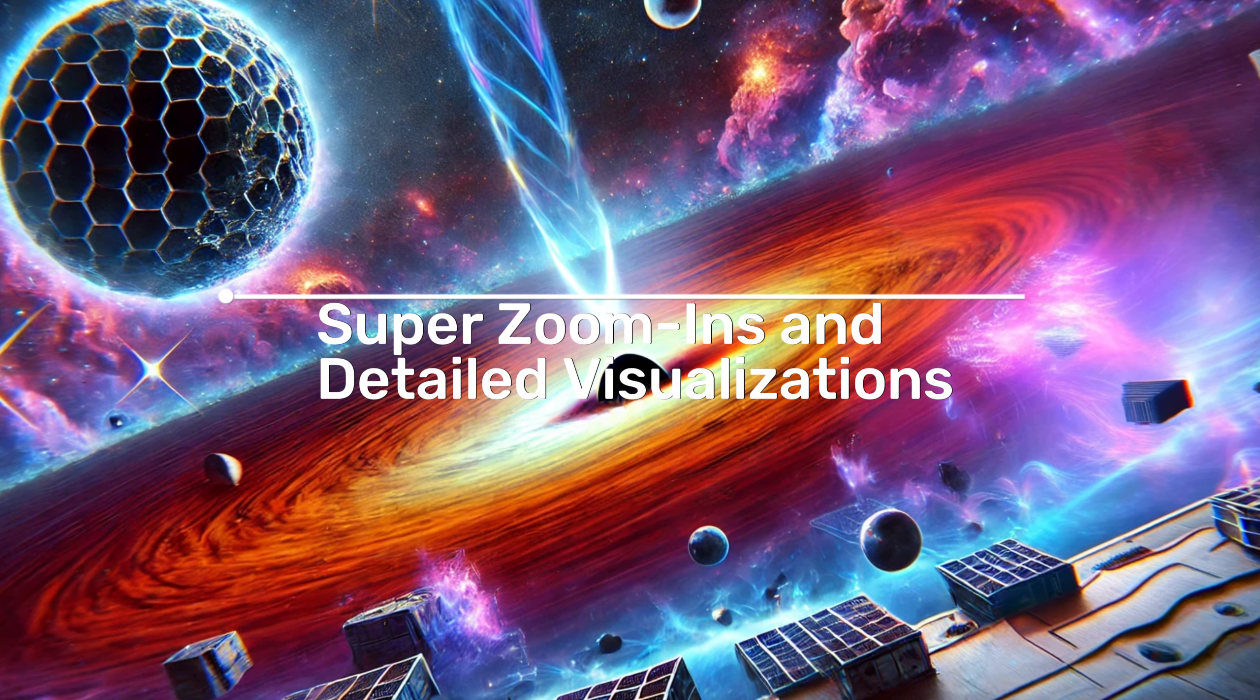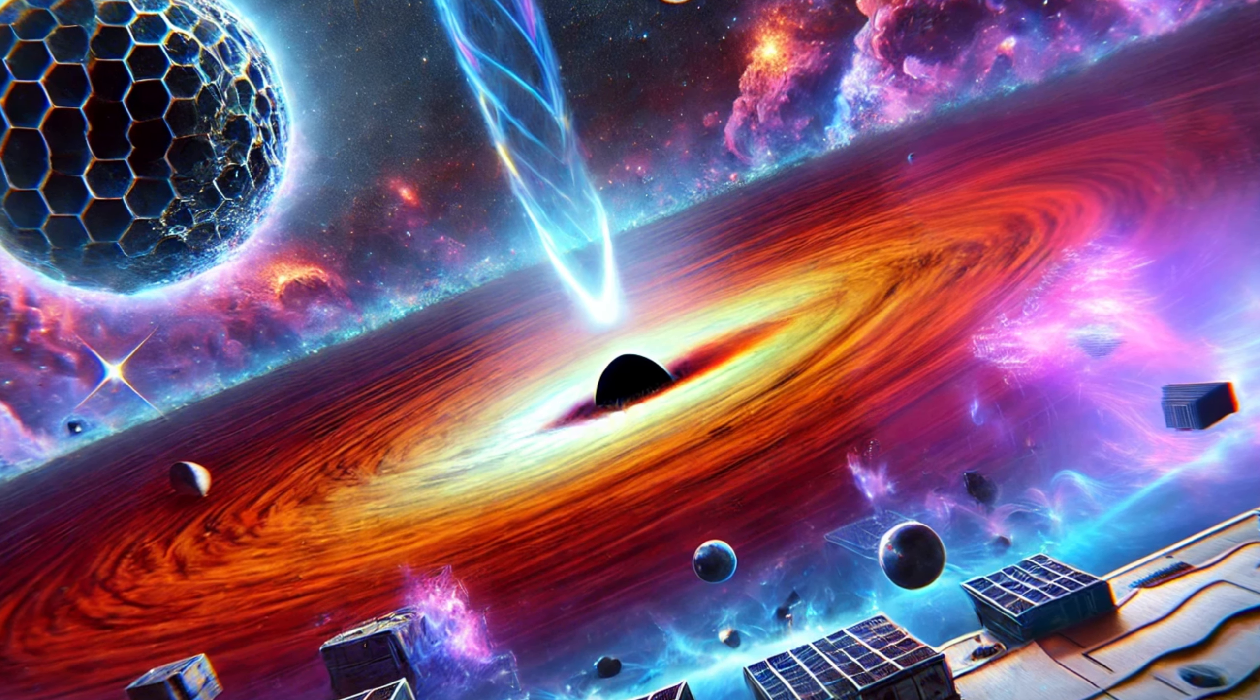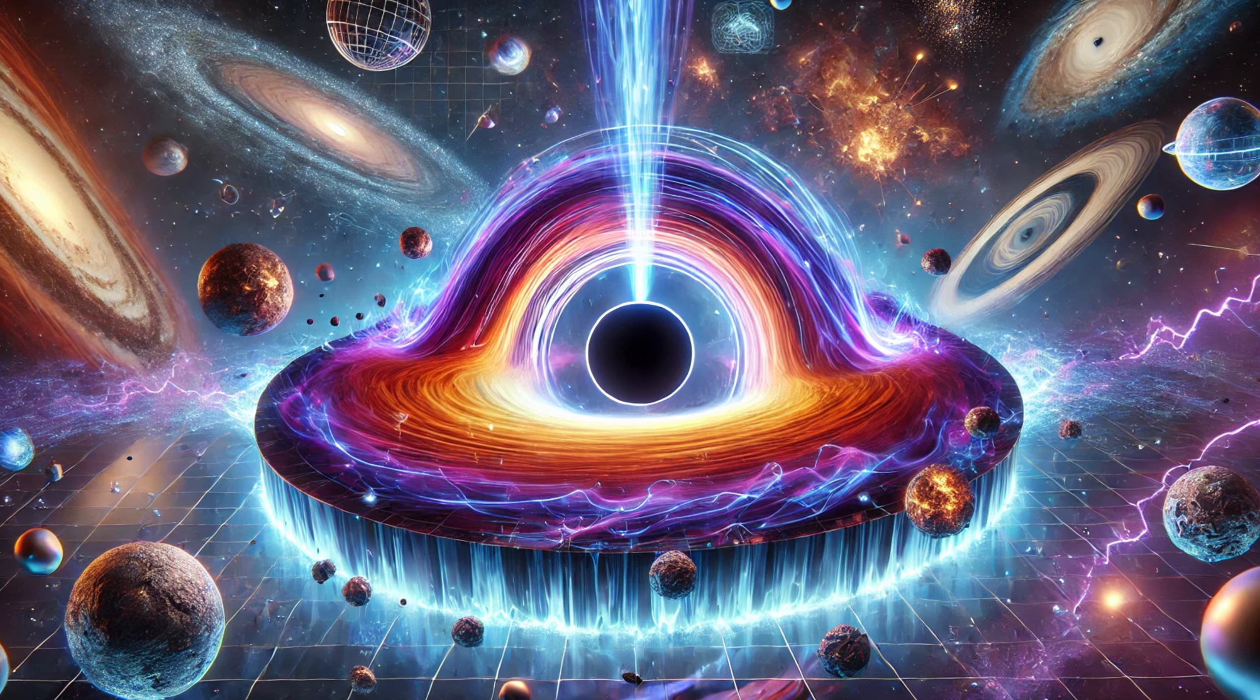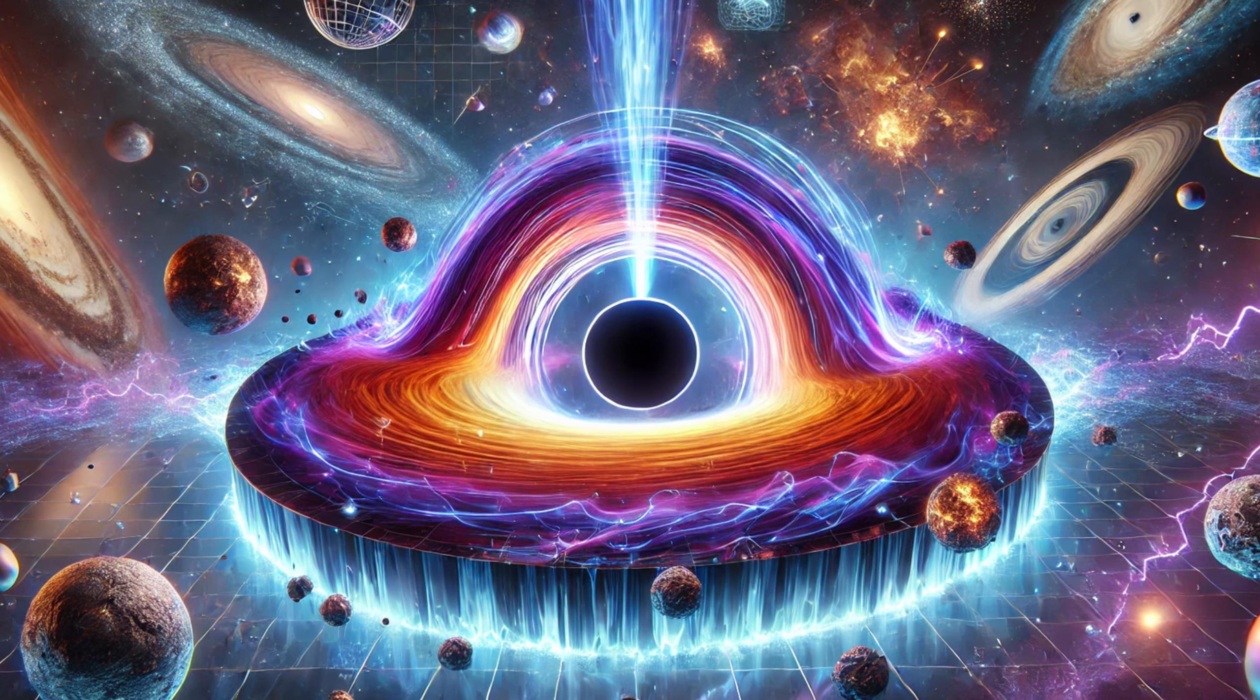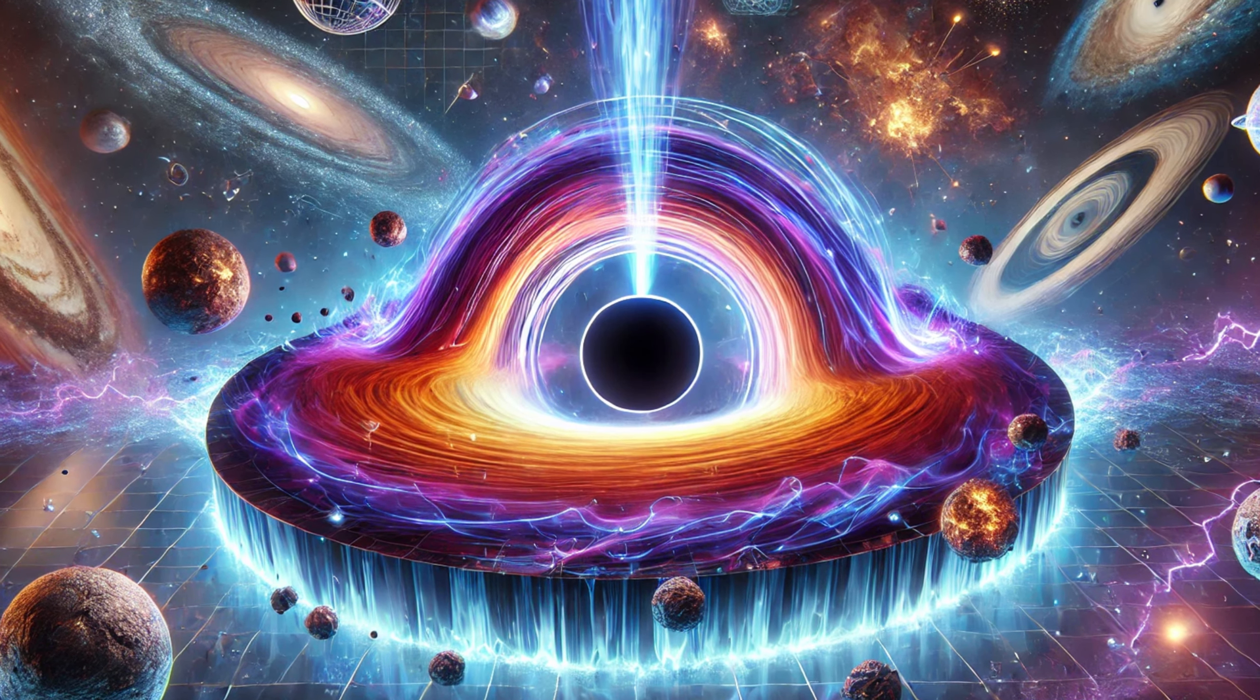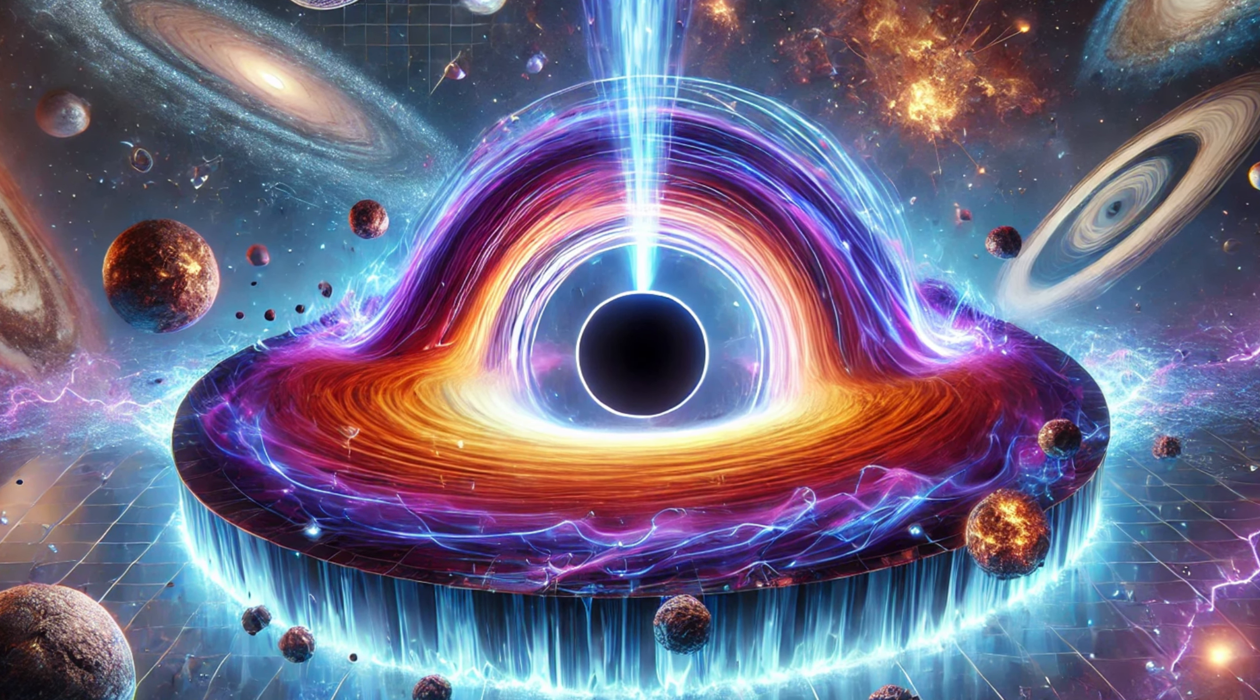Super zoom-ins and detailed visualizations. The team conducted a super zoom-in on a single supermassive black hole, simulating its growth from the early universe. This black hole, with a mass about 10 million times that of the Sun, attracted a massive inflow of material, forming an accretion disk around it. The simulation revealed unprecedented details about the dynamics of these disks, including their geometry, density, and the crucial role of magnetic fields.